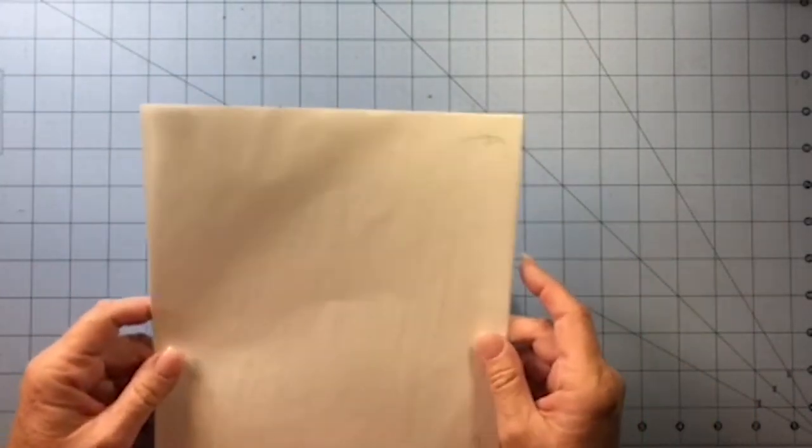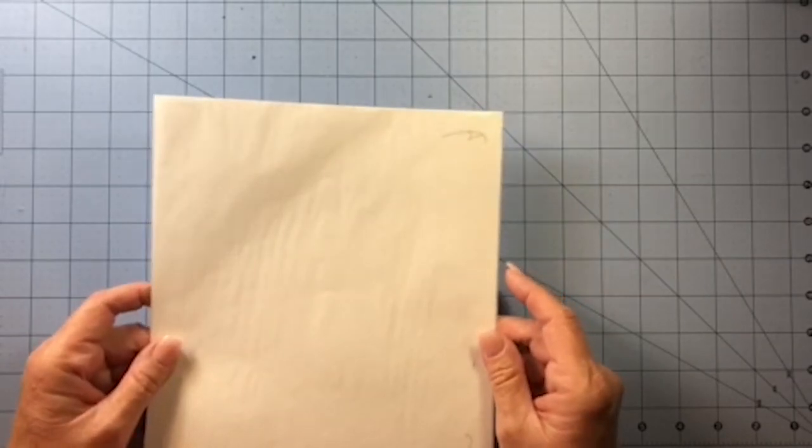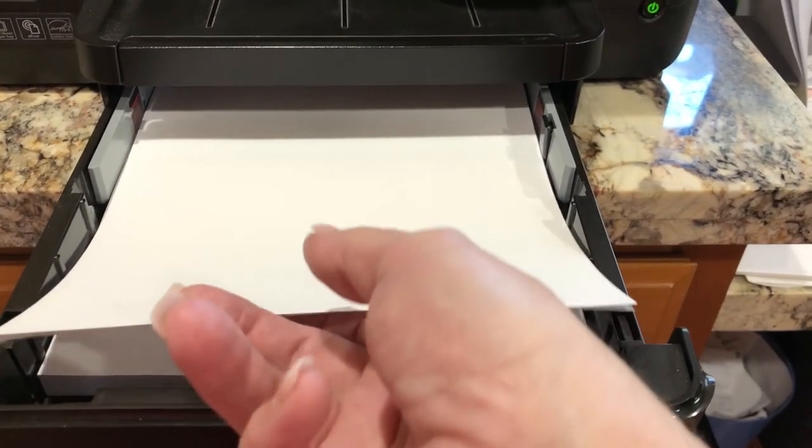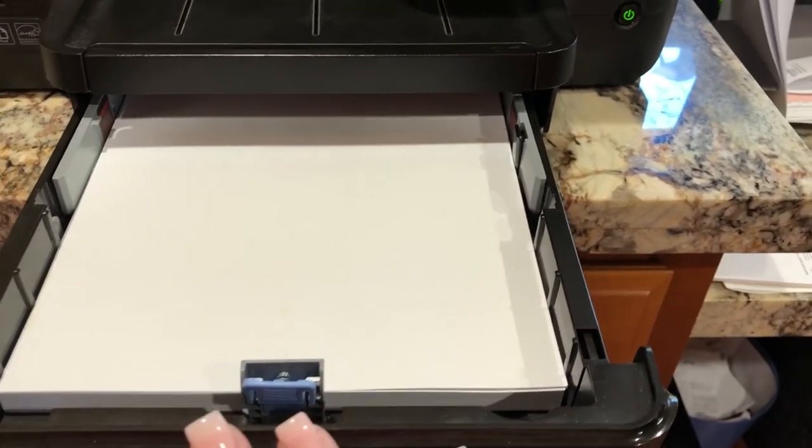So once you have it like this, we can head to the printer. Okay, so for my printer, I'm going to put this in here so that the tracing paper side is facing down because that's the orientation that my printer requires. So I'm just going to put it in the paper tray.